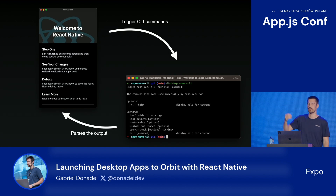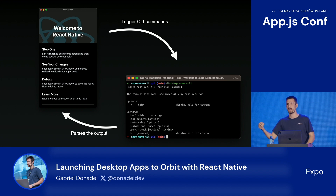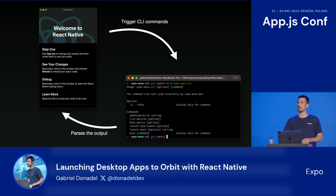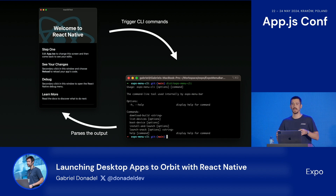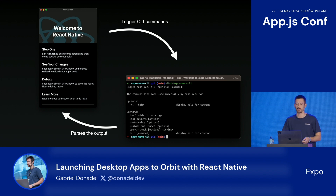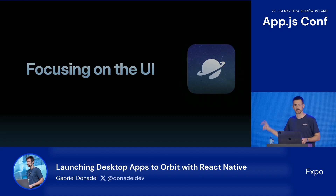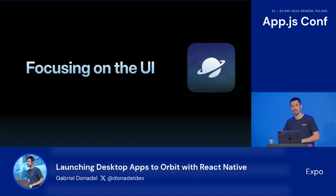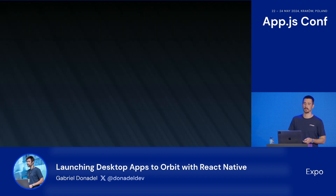With this architecture, we have a UI — in this case React Native macOS — that is constantly talking to this internal CLI through a simple NS task. This creates a compatibility layer that can handle all different types of data, translate errors, and display any type of information we want in our front end. With that out of the way, we could finally start focusing on our UI.